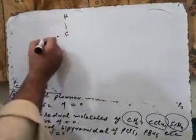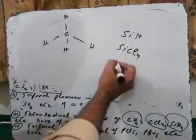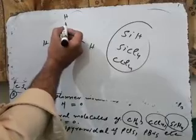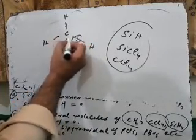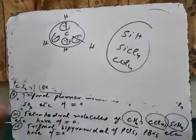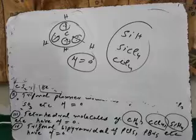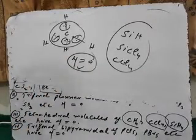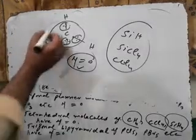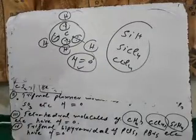The third type: tetrahedral molecules like CH₄, carbon tetrachloride, or silicon hydride also have zero dipole moment. In the tetrahedral structure of CH₄, SiH₄, SiCl₄, or CCl₄, the central carbon atom shares its four valence electrons and has four bond pairs which cancel the effect of each other. When we add these bond moments by the head-to-tail rule, the resultant is zero.